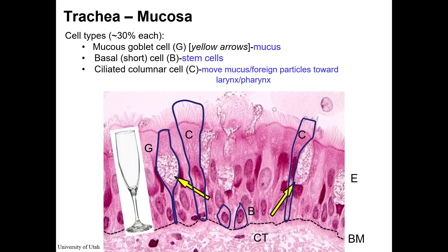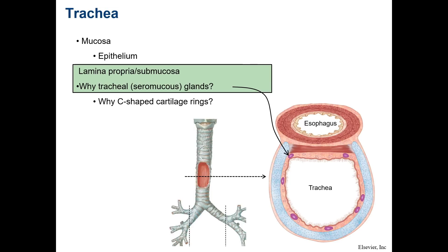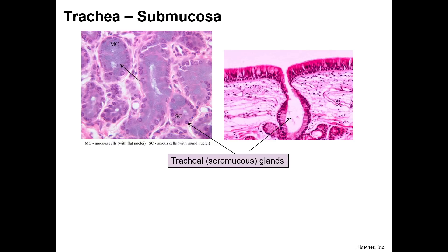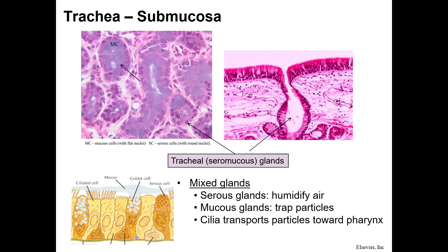However, neuroendocrine cells can't be distinguished with H&E staining. The lamina propria or submucosa contains seromucous glands. It's often hard to determine the actual border of lamina propria versus submucosa, so you will find that some texts say the glands are in the lamina propria while others say the submucosa — for our purposes, both are correct. These glands are mixed glands: mucous cells produce components of airway mucus that trap particles, and serous glands produce a thinner, watery substance that helps humidify the air, keeping the lungs free of particles and bacteria.